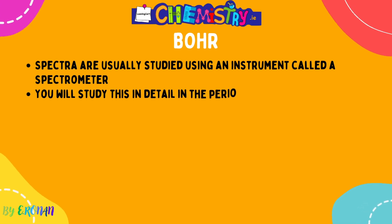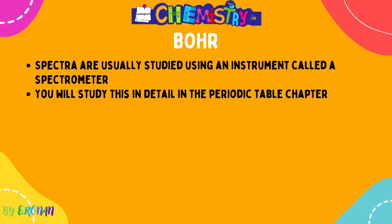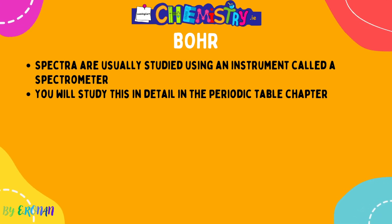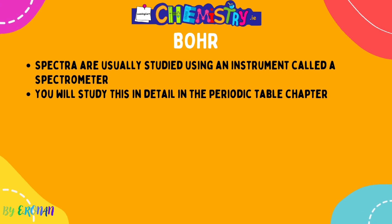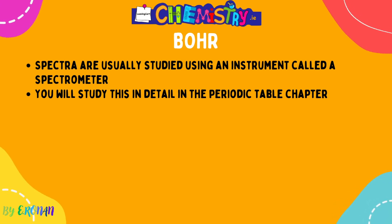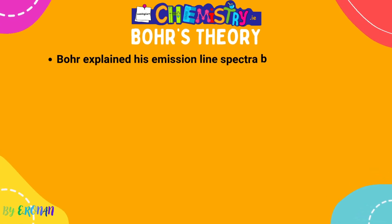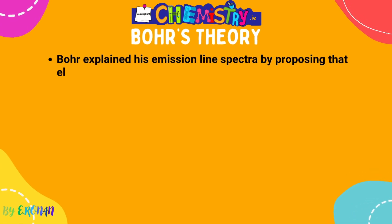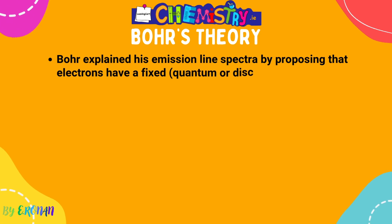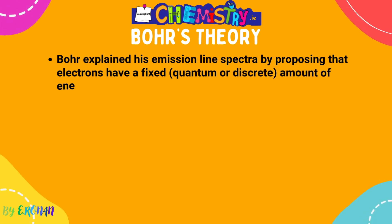Spectra are usually studied using an instrument called a spectrometer. You will study this in more detail in the periodic table chapter, where you will learn about all the processes of how the mass spectrometer works and the order in which they occur. As far as the arrangement of electrons chapter is concerned, we do not cover the mass spectrometer yet.